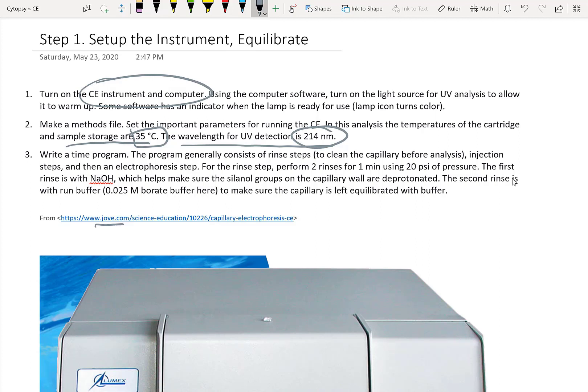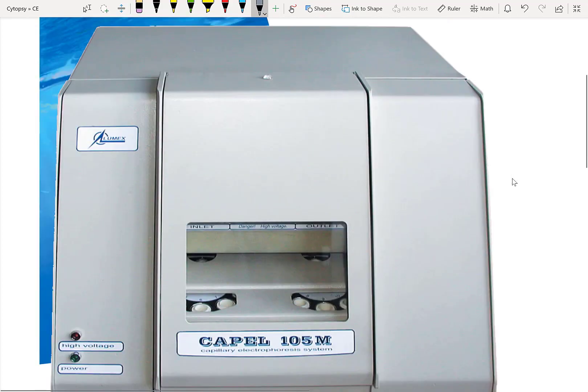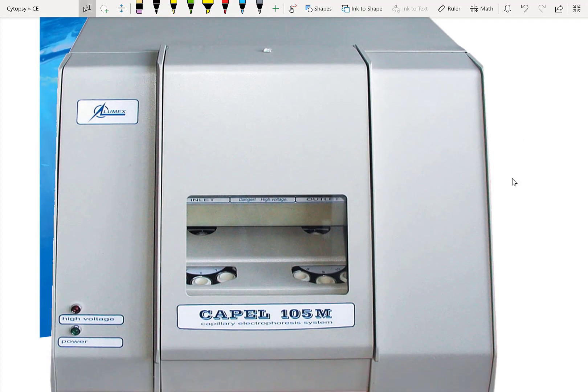Finally, the third step is to write a program which consists of rinse steps. And inside the rinse steps, we're going to be doing an NaOH rinse as well as a run buffer rinse, which is borate buffer. Let's take a look at what this actually means. So here's our instrument. We're going to first turn it on. Okay, there should be some power here. Let's just color that in. Okay, the power is on.